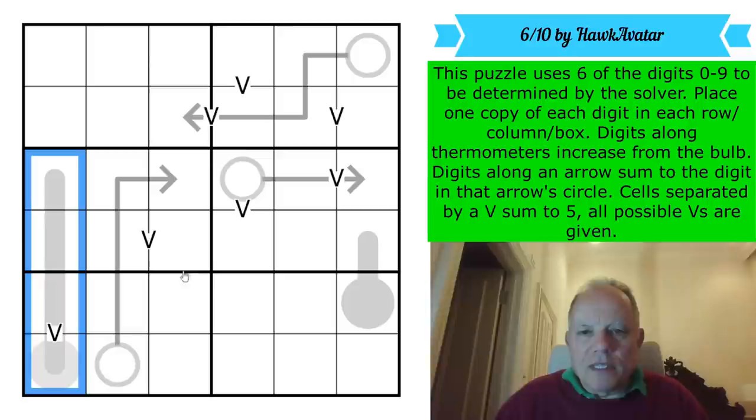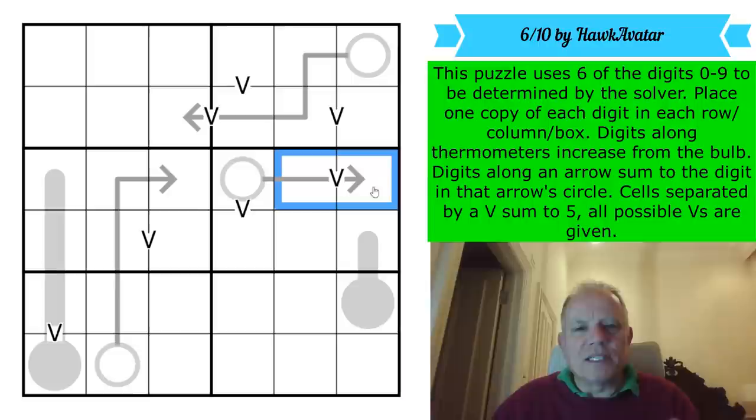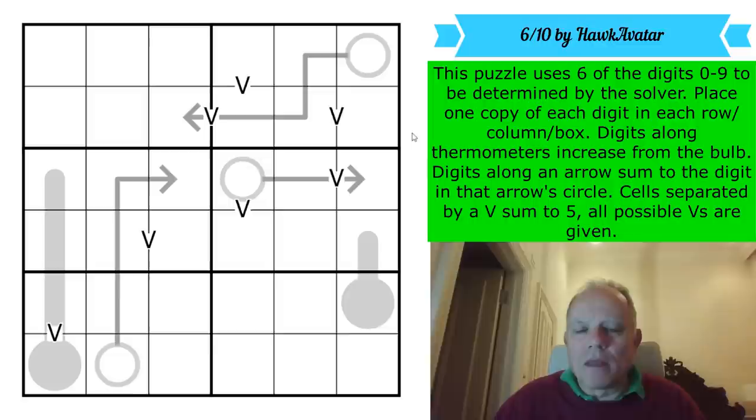Digits along thermometers increase from the bulb to the end. Digits along an arrow sum to the digit in that arrow's circle, and those can contain repeats. Now, cells separated by a V sum to five. All possible Vs are given. So there is a negative constraint. These two cells can't add up to five because there's no V in between them. So an intriguing rule set by Hawk Avatar there. Do give it a go on the link under the video. I have no idea how long this will take.